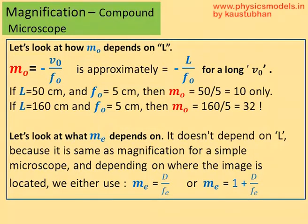Now, for a long tube, the V0 is so big and F0 so small that we can approximate it as minus L by F0. And that's why the magnification of the objective lens becomes proportional to the tube length of the microscope. Of course, we pay more money for a longer microscope. So, if L is 50 centimeters and F0 is 5, we get an M0 of just 10. If L is 160 centimeters, which is a normal one, and F0 is 5, we get M0 is equal to 32. Then we multiply it by the Me. Me itself is either D by Fe or 1 plus D by Fe, depending on where the image is formed.